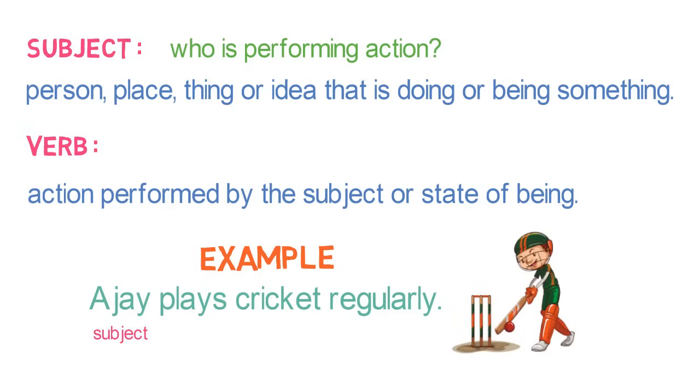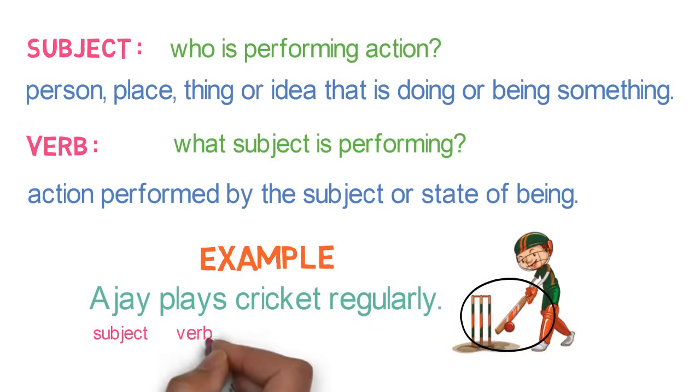And, to identify the verb, ask the question, what subject is performing? It is playing. So, it is the verb in this case. This way, we can identify the subject and verb in the sentence, asking these questions.